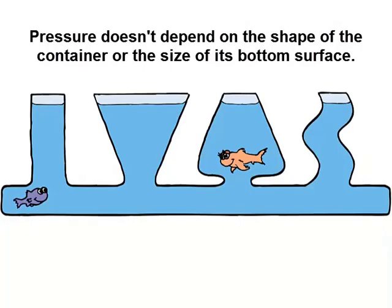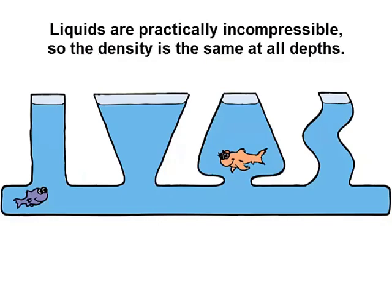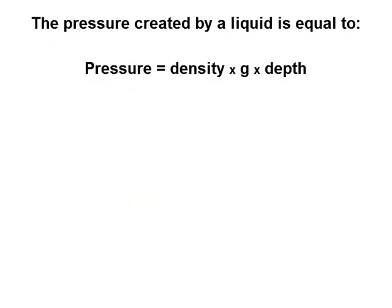The pressure of a liquid at rest doesn't depend on the shape of the container or the size of its bottom surface. Liquids are practically incompressible, so the density of a liquid is normally the same at all depths. The pressure created by a liquid is equal to density times g times depth.